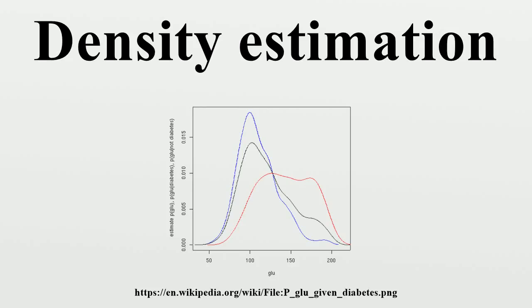The unobservable density function is thought of as the density according to which a large population is distributed. The data are usually thought of as a random sample from that population.